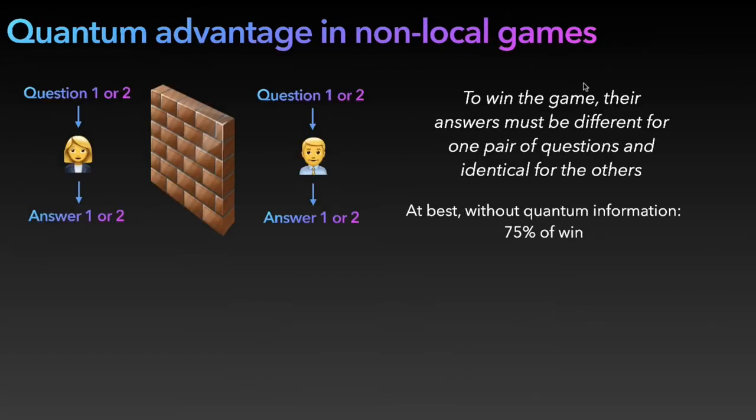Now let me tell you a bit more about how this works. To explain this, I will explain what is a non-local game. In a non-local game, we have two players, we usually call them Alice and Bob, and they receive some questions and need to give some answers. They cannot communicate during the game. They can agree on a strategy beforehand, but once the game has started, they cannot communicate.